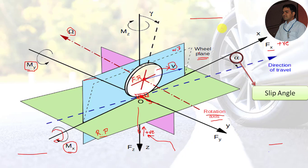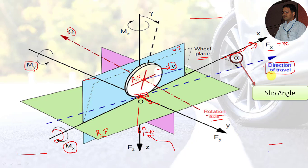The next term is slip angle. The slip angle is the angle between the direction of wheel heading and the direction of travel. At the contact patch, the tread pattern in contact with the road continuously faces lateral forces when the vehicle is about to turn. During this situation, the wheel heading direction and the direction of travel separate, and the angle generated between these two axes is known as the slip angle, always indicated by alpha.